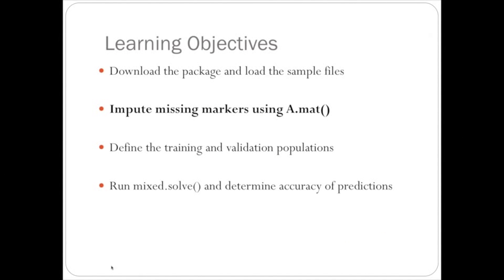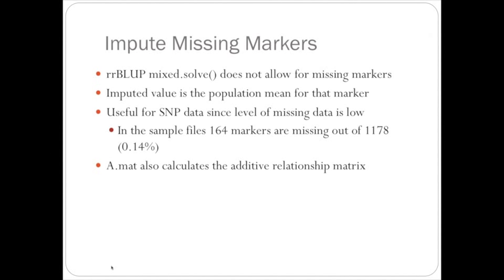Moving on to our next learning objective of imputing missing markers using the a.mat command. RR BluntMixSolve does not allow for missing markers, so NA values are not allowed. If NA values are in the matrix, an error message will come up.